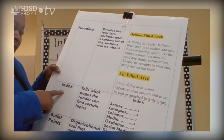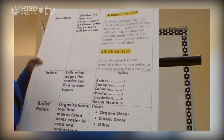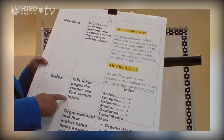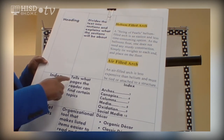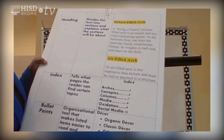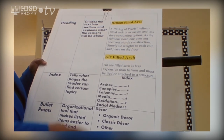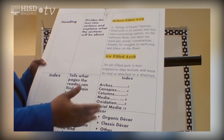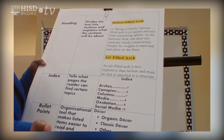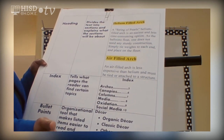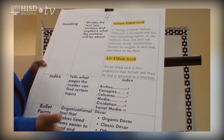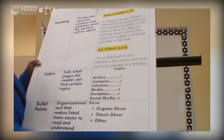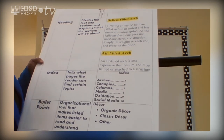The index tells what pages the reader can find certain topics. The index is in alphabetical order. Suppose I wanted to find out about balloon columns — A to C — page 7.